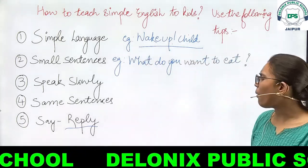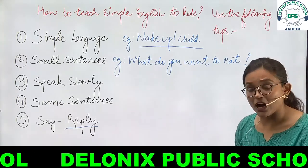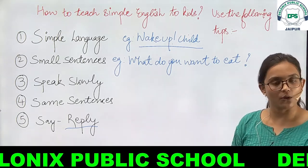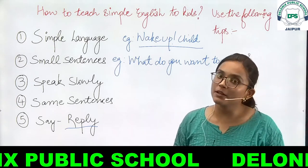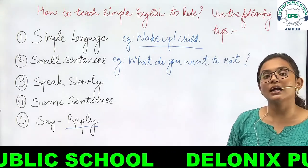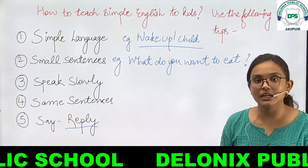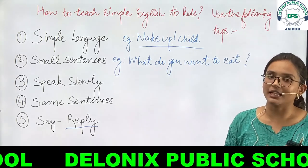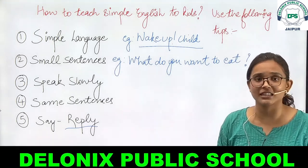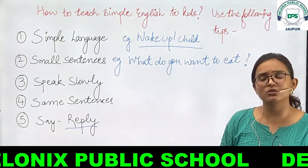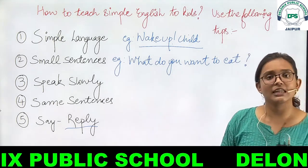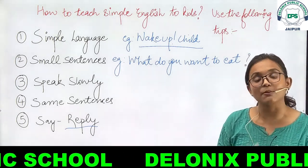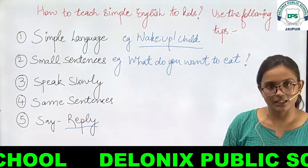Toh yeh paanch points hain jisko aap roz ghar mein use kar sakte hain, aur bahut chhote-chhote sentences — for example, sit down, talk softly, get up, don't shout — aise chhote-chhote words ka prayog karke baccho ko sikha sakte hain. Iss baat ka bilkul vishesh dhyan rakhein ki agar aap khud bachche se English mein baat nahi karenge toh Institute ya coaching mein daalne se kaam nahi aayega. Isliye chhoti-chhoti words ghar pe English mein zyada use karein.